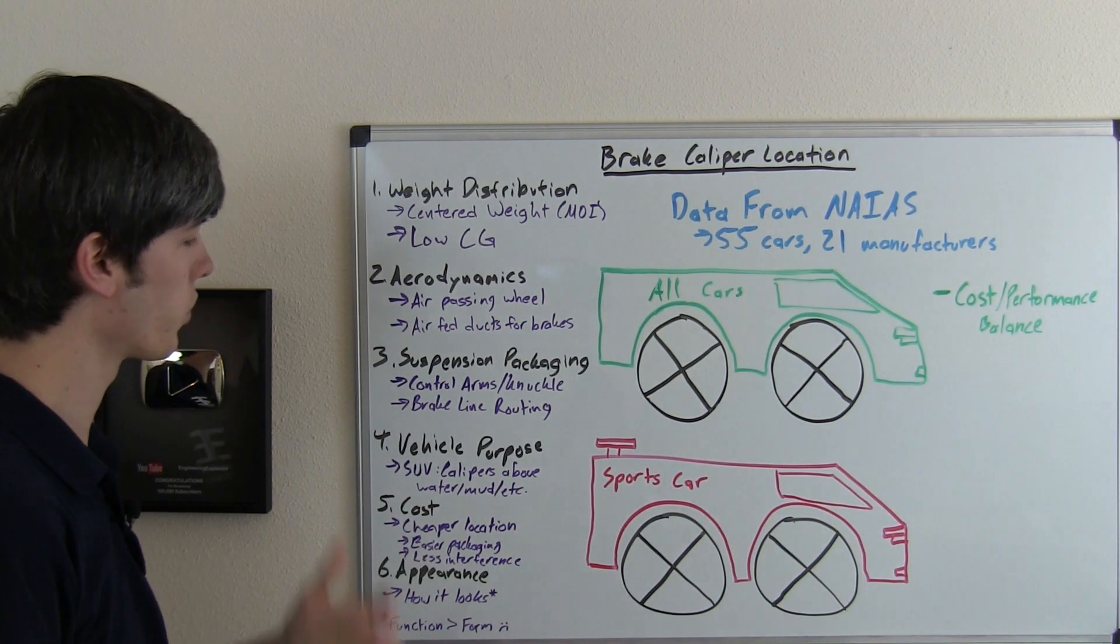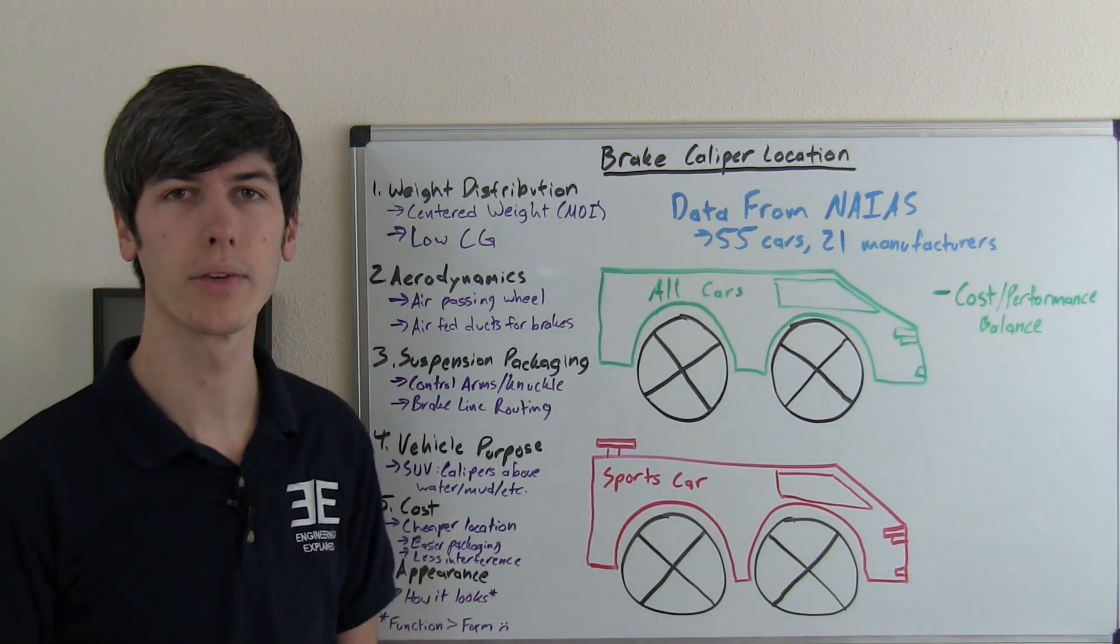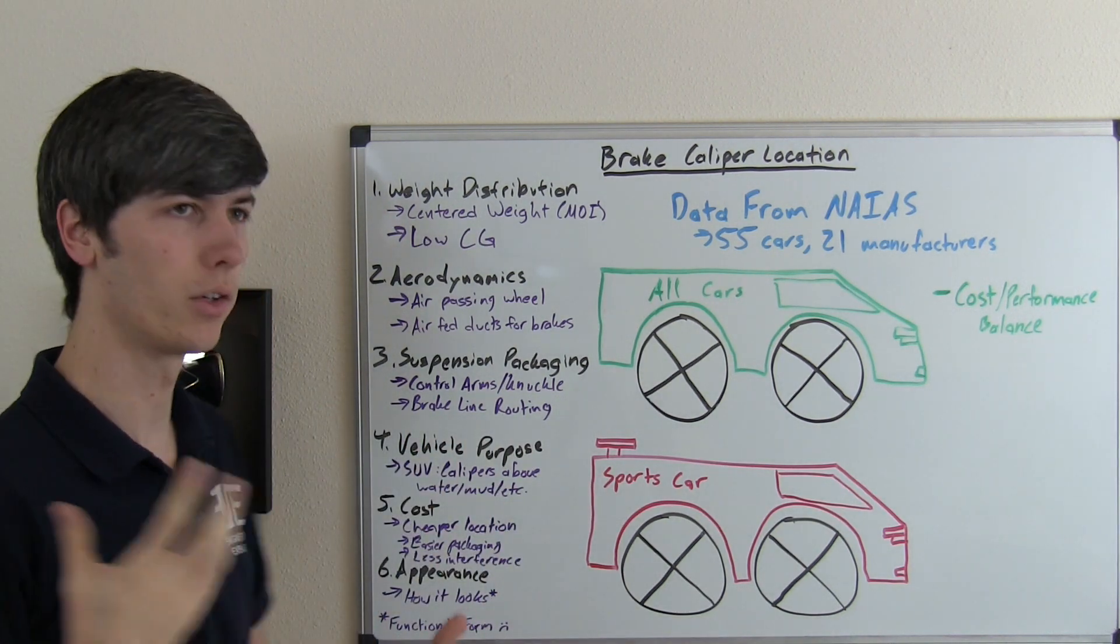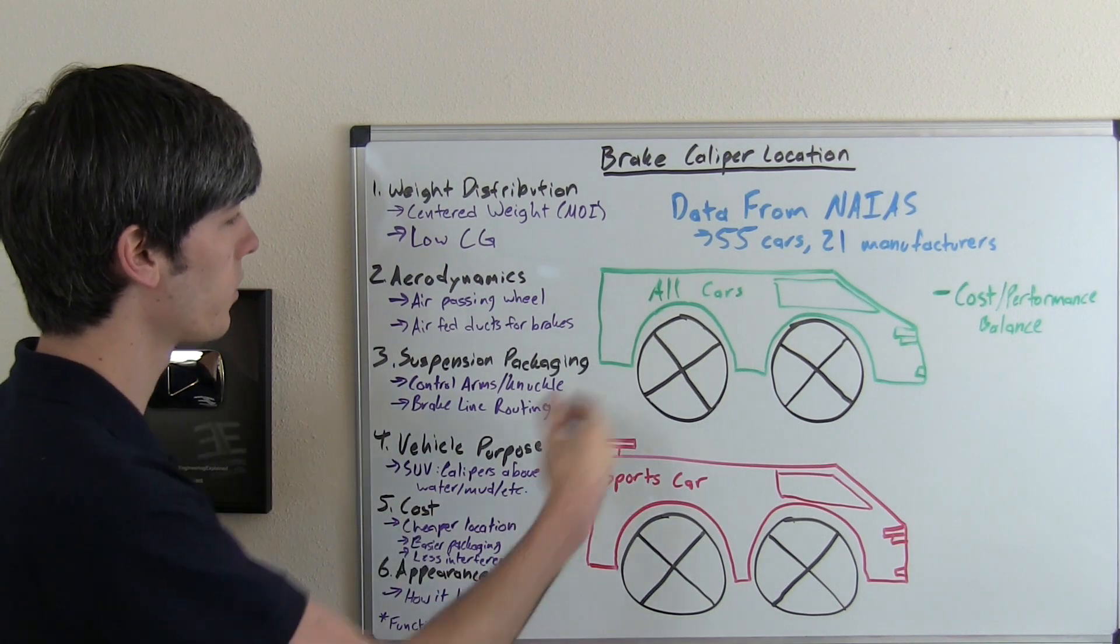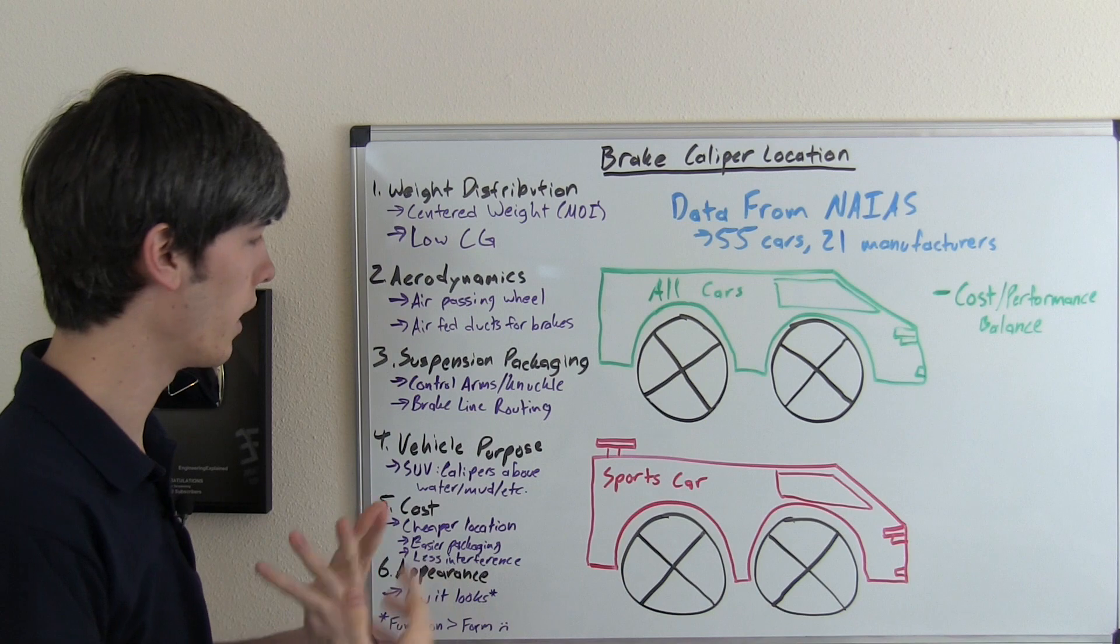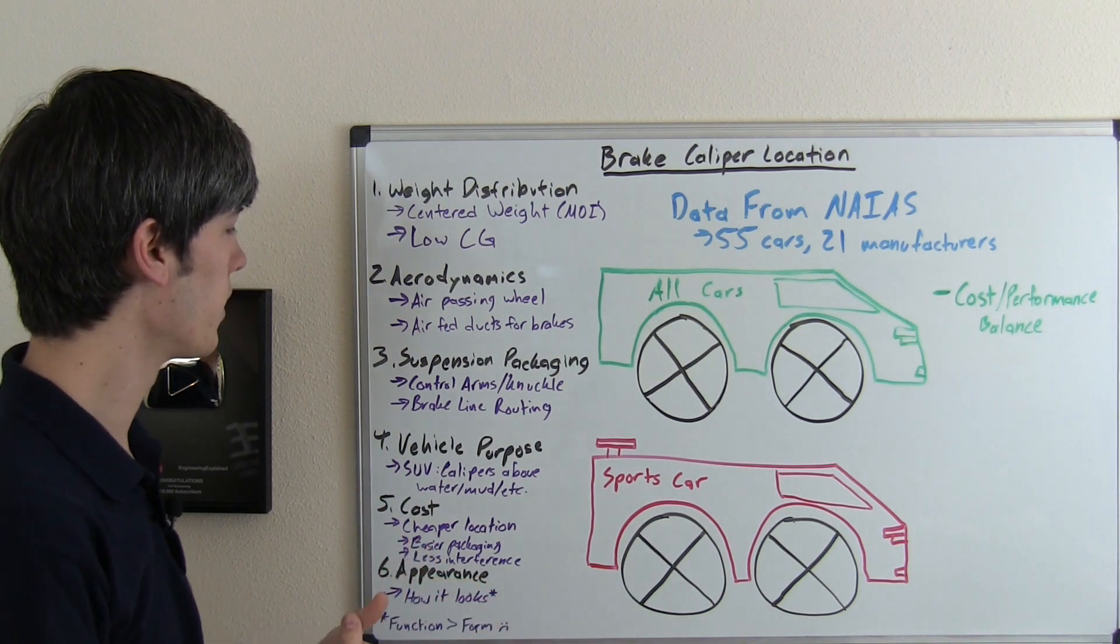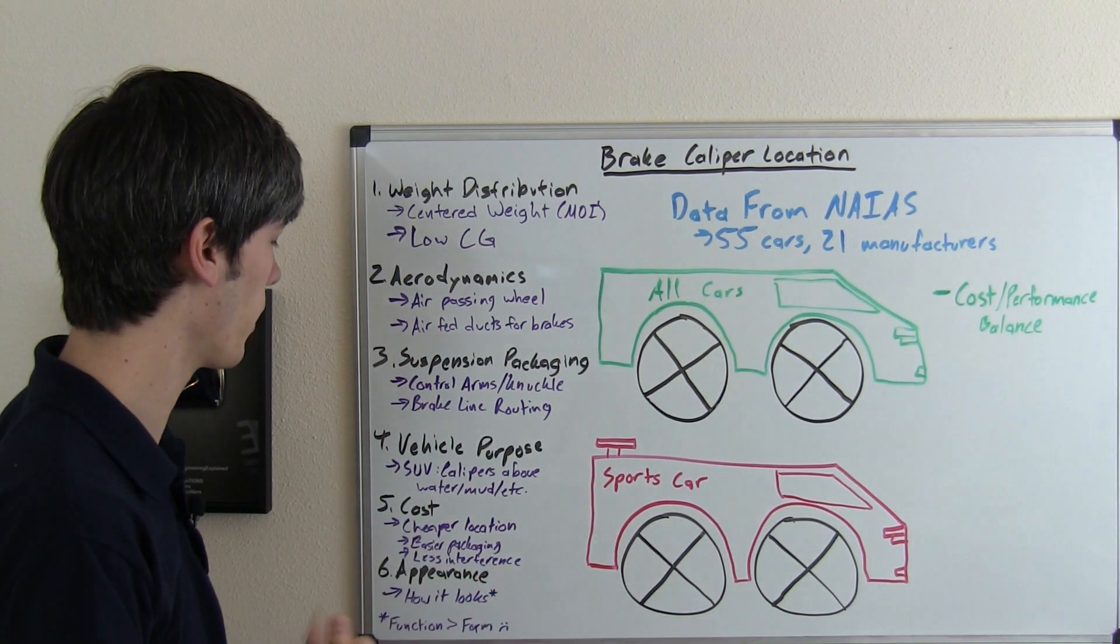The vehicle purpose can play a role. So for example if you have an off-roading 4x4 vehicle that is going to be going through deep mud or water or things like that, well then you may place the calipers a bit higher to try and keep them out of the mud or the debris or whatever it may be down there so they don't get quite as dirty or get messed up.